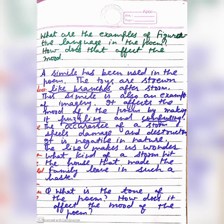So the line makes us wonder what kind of storm hit the house that made the family leave in such haste. Hum hairan hain is baat ko lekar, sochne par majboor hain ki kis type ka storm tha jo family ko achanak se wahan se ekdam jaana pada, chhodke sab kuch.